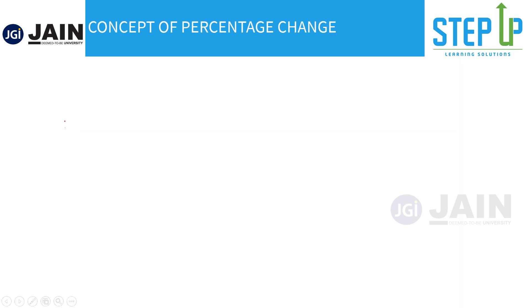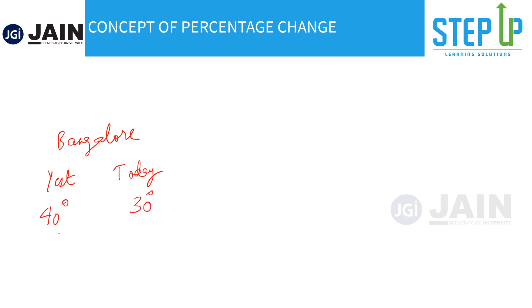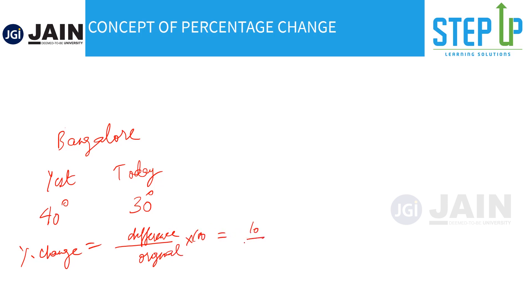I'll begin by discussing the concept of percentage change. Any increase or decrease in a quantity will result in a percentage change. Let's say we're in Bangalore discussing the weather — yesterday the temperature was 40 degrees and today it is 30 degrees. The formula for percentage change is the difference upon the original into 100. So it becomes 10 upon 40 into 100, which is 25%. This is the simple concept of percentage change.